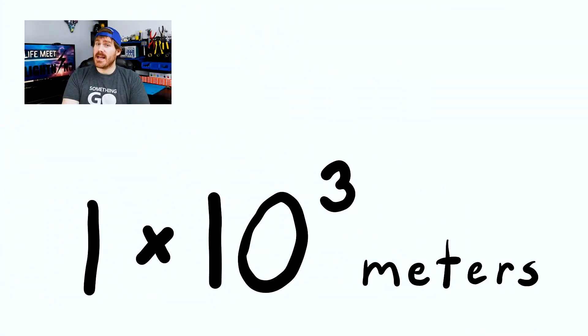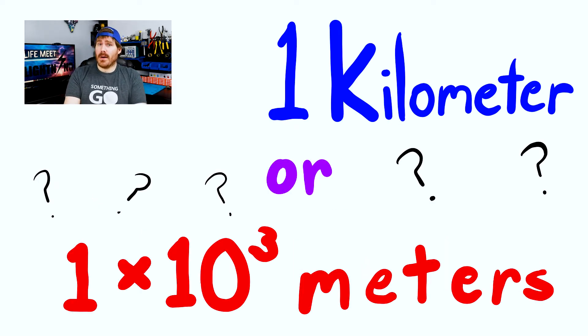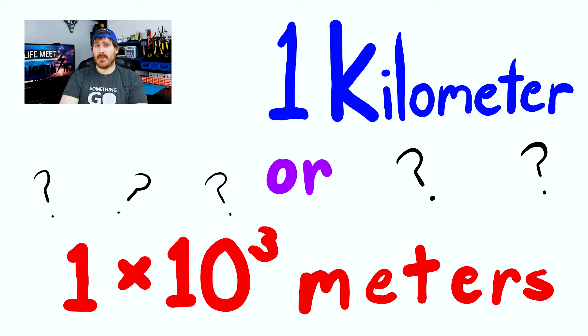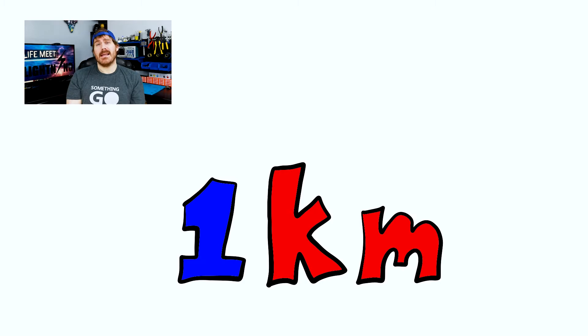Now let's talk about metric prefixes. Our base metric unit earlier was the meter, and when we started working with larger distances we added a prefix to the base unit. There are 1,000 meters in a kilometer — in engineering notation this is 1 times 10 to the power of 3. So which would you rather write: 1 kilometer or 1 times 10 to the power of 3 meters? We can shorten kilometer by abbreviating it to just km. Easy.